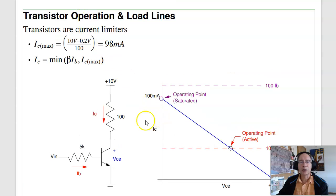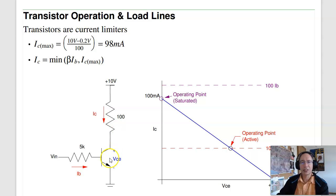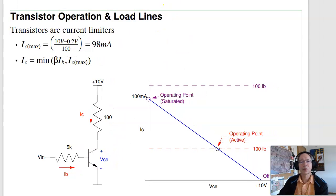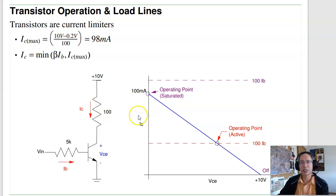The basic circuit is the same one we looked at before. I've got my load — headphone, LED, whatever you want — a power supply, and a load. I'm trying to push current through it, so I'd like to add an electronic switch: that's the transistor. On the load line, if there is no current flowing, I have 10 volts across my transistor. When the transistor turns on, ideally it's zero volts and I have 100 milliamps — actually you'll only get to about 0.2 volts when you saturate.